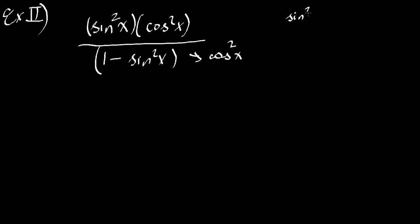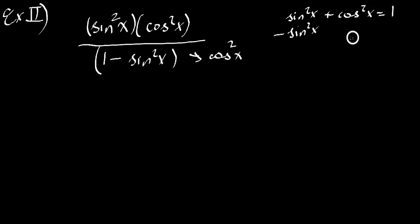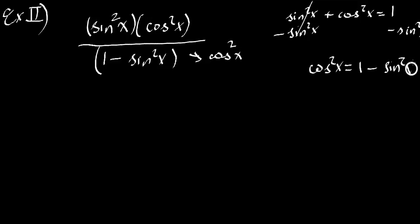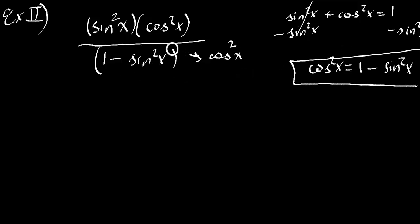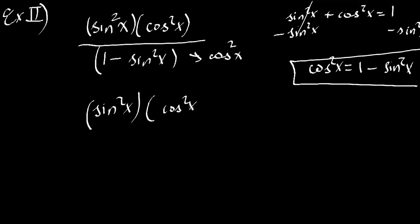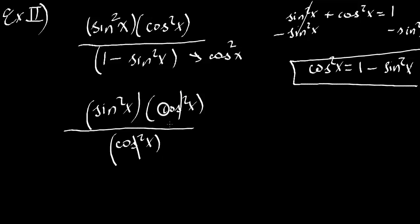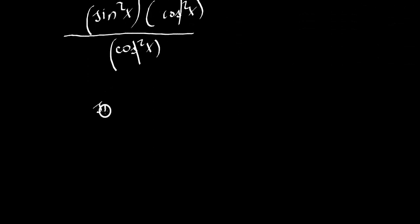We know that sine x squared plus cosine x squared equals 1. We want 1 minus sine x squared, so we subtract sine x squared from both sides — that cancels — and you get cosine x squared equals 1 minus sine x squared. So we can rewrite the denominator as cosine x squared. We still have sine multiplied by cosine divided by cosine x squared. The cosines cancel, and you're left with sine x squared.